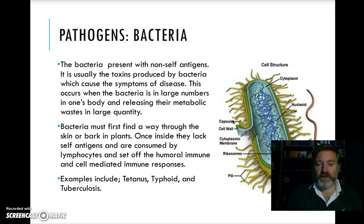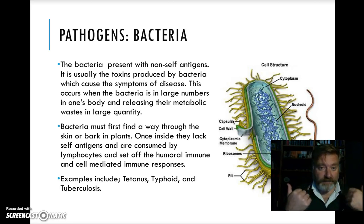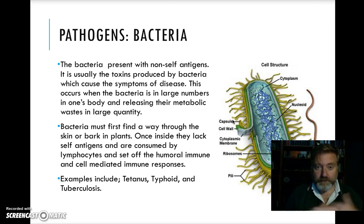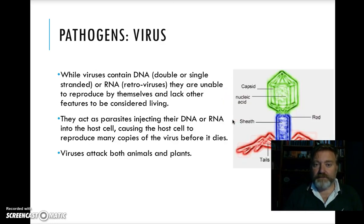Bacteria have to find their way across an epithelial layer — the skin. If it's intact, there's no way in. If there's a cut or infection that opens it up, they can get in. That epithelial layer lines our digestive, reproductive, and respiratory systems, so any damage in any of them will allow infection to enter. The same applies to plants through bark.